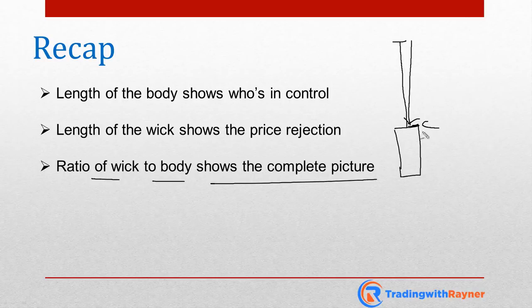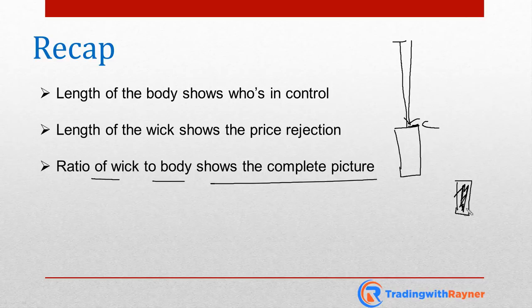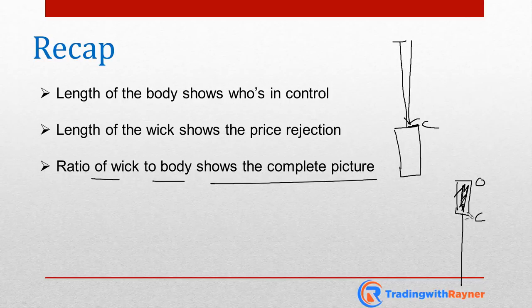No doubt the body has closed higher and the buyers are still in control, but when you look at it relative to the wick, you know there is selling pressure lurking as well. Similarly, if you have a bearish candle that closed lower, it looks bearish — but if it has a very long lower wick, it's not as bearish anymore, because that long wick shows rejection of lower prices. Even though the candle opened and closed lower, you know there is buying pressure lurking due to that long wick. This is why you want to see the ratio of the wick to the body to get the complete picture.